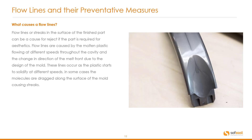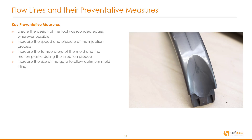Flow lines. We can see typical flow lines here. Flow lines are streaks in the surface of the finished part and can cause rejection if the part is required for aesthetics. Flow lines are caused by the molten plastic flowing at different speeds throughout the cavity and the change in direction of the melt front due to the design of the mold. These lines occur as the plastic starts to solidify at different speeds; in some cases the molecules are dragged along the surface of the mold causing streaks. Key preventative measures: ensure the design of the tool has rounded edges where possible; increase the speed and pressure of the injection process; increase the temperature of the mold and the molten plastic; and increase the size of the gate to allow optimum mold filling.